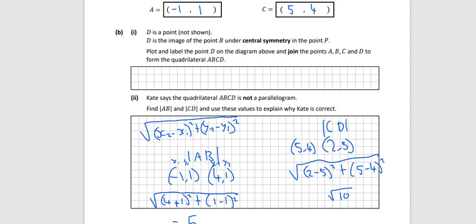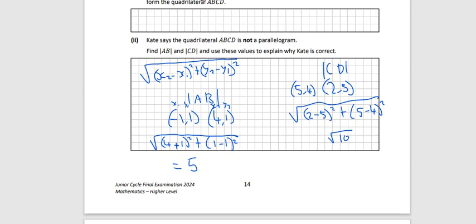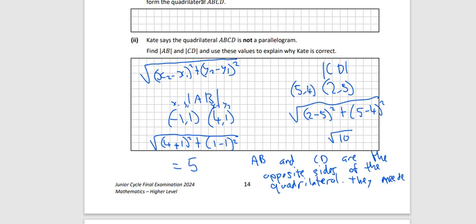Therefore, they wanted us to explain as well. You could say AB and CD are the opposite sides of the quadrilateral. They needed to be equal in order for it to be a parallelogram.